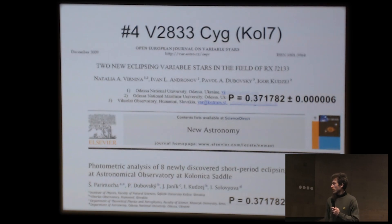We have two variables discovered in Kolonica saddle, named Col7 and Col8. It already obtained names V2833 Cygni and the next object I will show later. There were two papers on this object. First by discoverer Natalia Virnina and co-authors who published this value of the period.